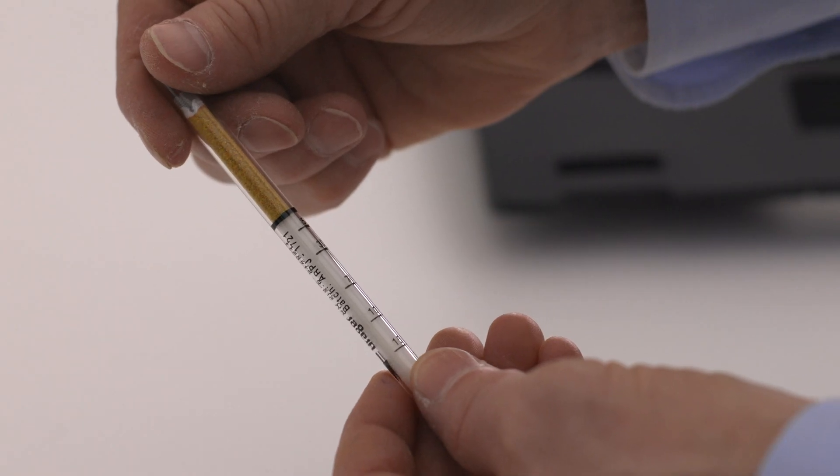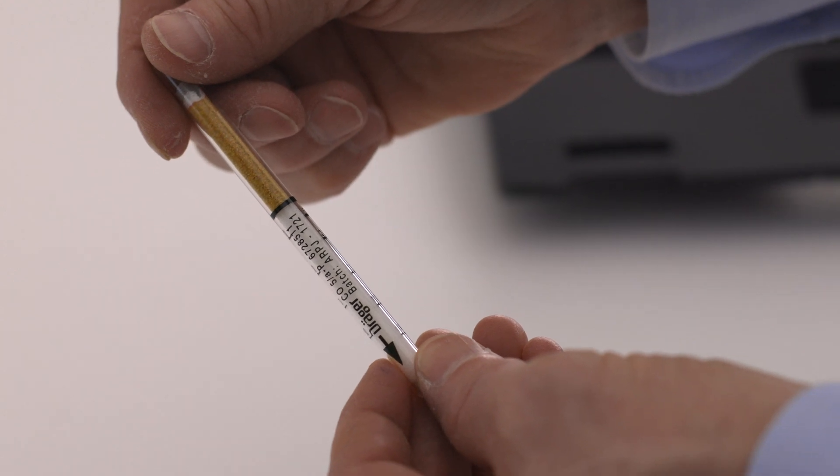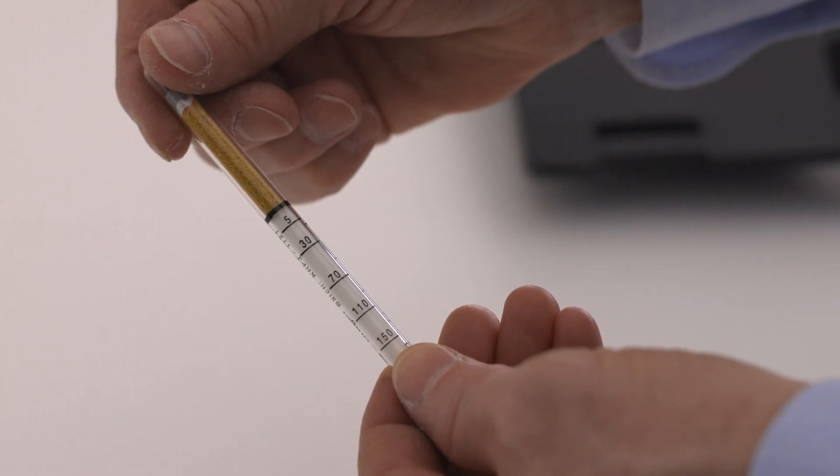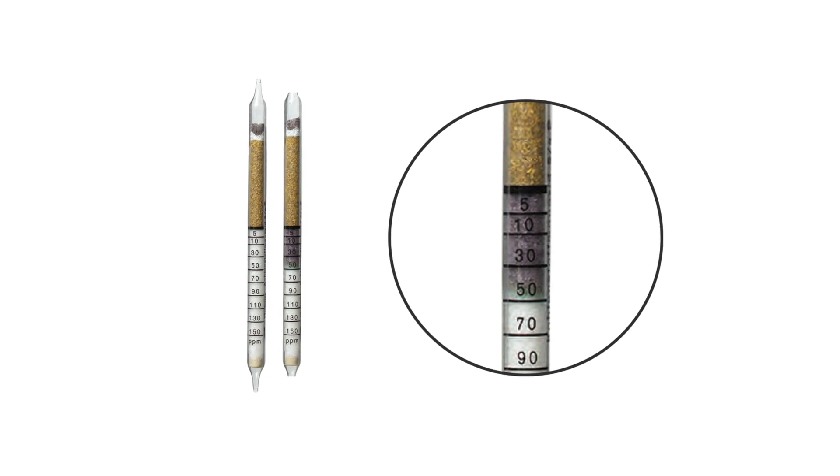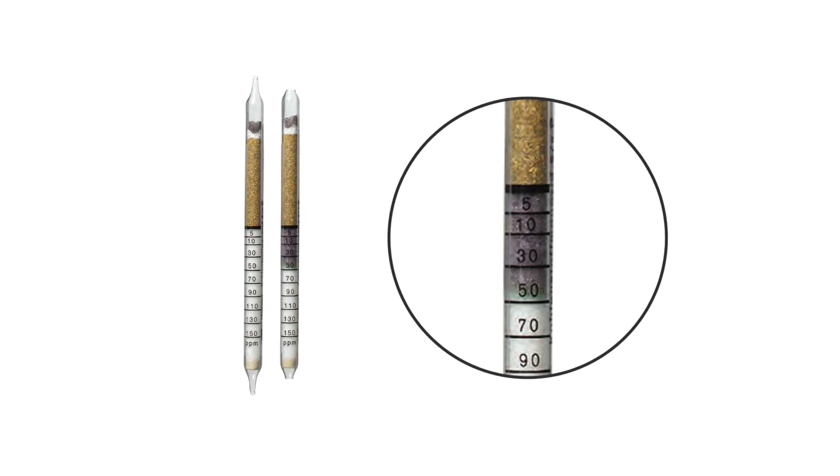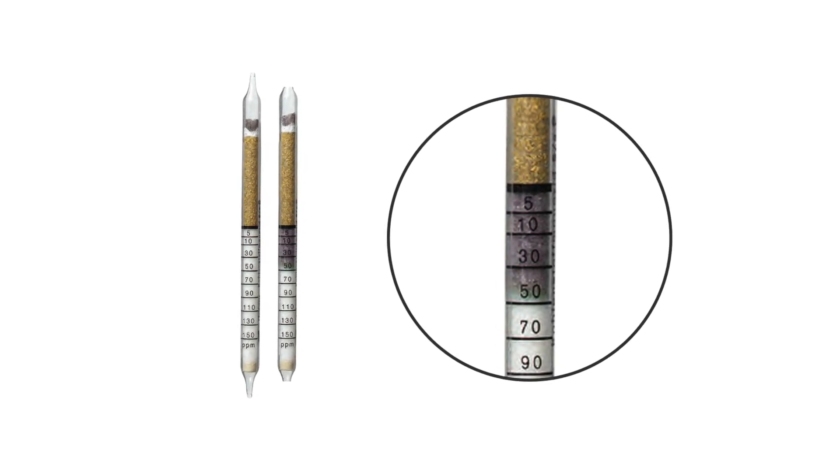Next, check the carbon monoxide tube. There is no visible discoloration on the indication layer of this tube. A positive indication for carbon monoxide would result in a light brownish discoloration with a light green front.